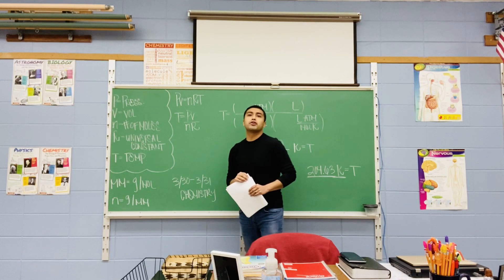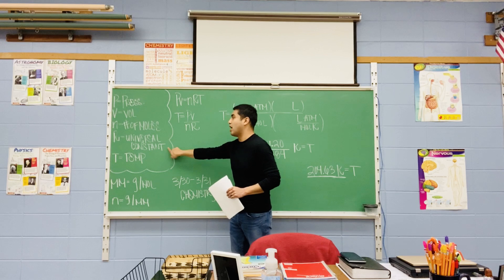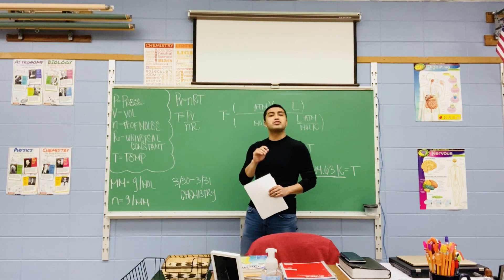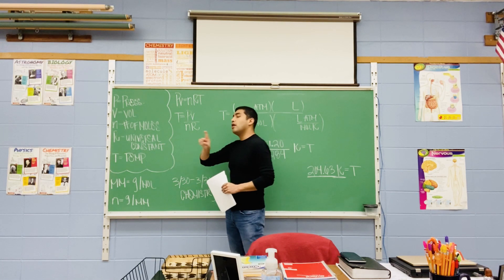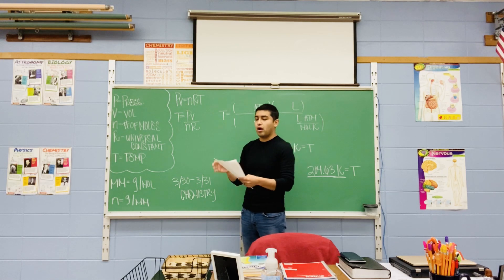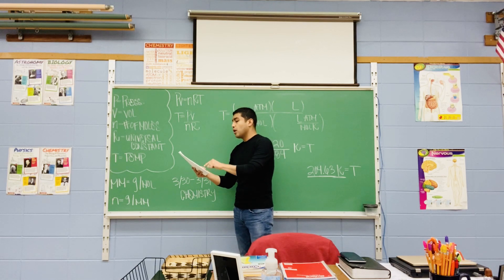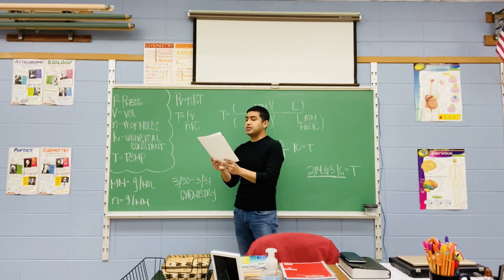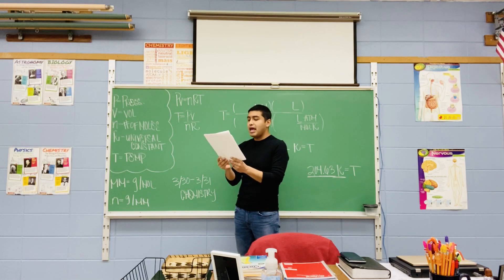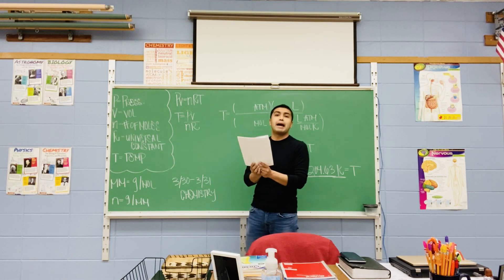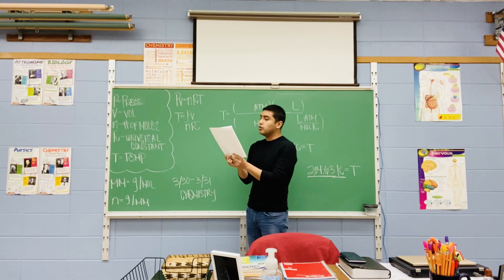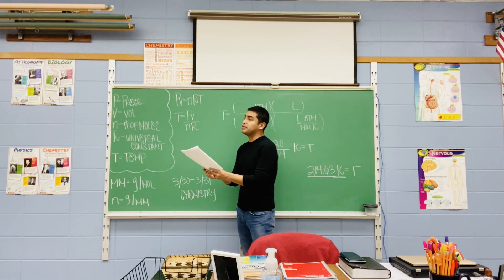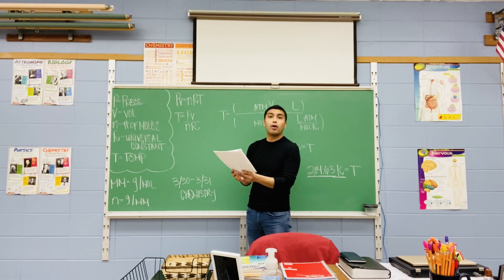Then you have R. R is a universal gas constant. When a constant is used in science, it means it's always given and does not change. The good thing is your R constant is already given to you on the formula sheet. Look at the bottom right where it says gas laws equation symbols, and towards the bottom you'll see a capital R. There are three different options: 8.31, 0.0821, and 62.4.